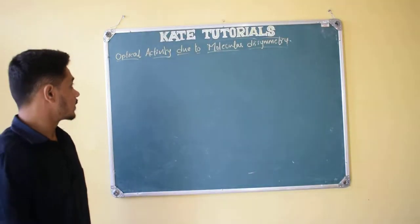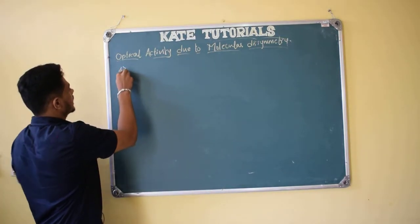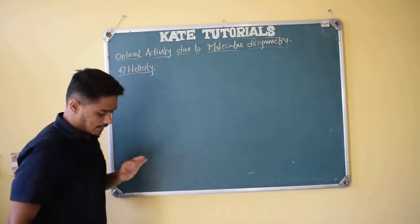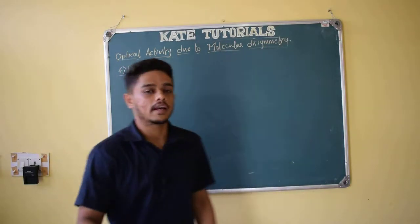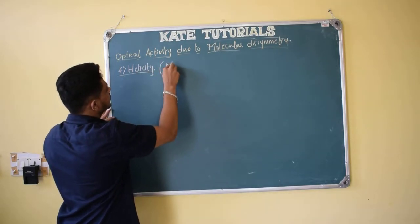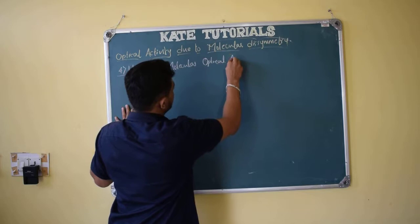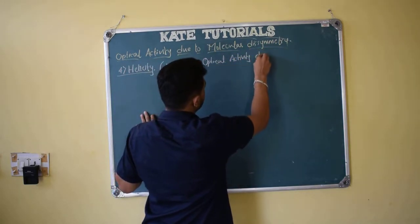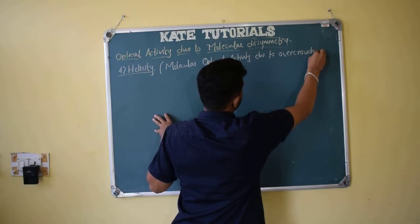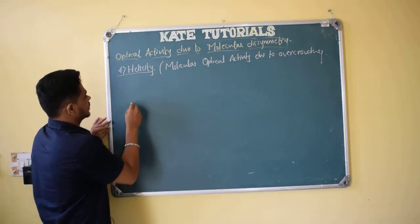Hi friends, welcome to this class. In the last class we discussed about biphenyls. In this class let us discuss about helical compounds, that is helicity. Helicity is also known as molecular optical activity due to overcrowding. Because of this overcrowding the molecule gets optical activity.